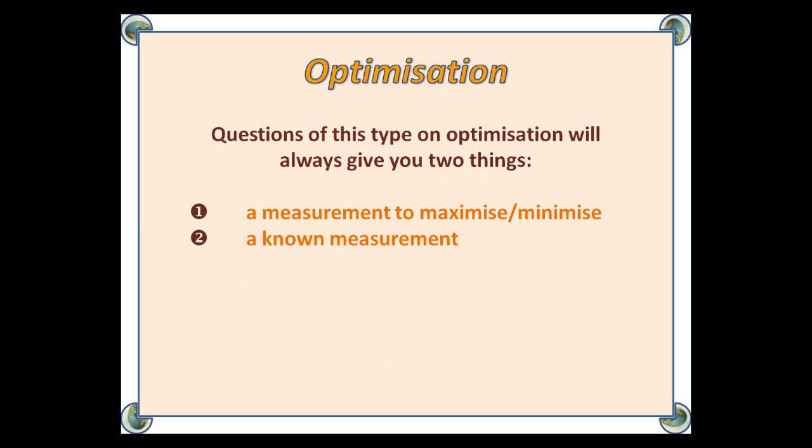Questions of this type on optimisation will always give you two things. Firstly, a measurement to maximise or minimise, and secondly, a known measurement.